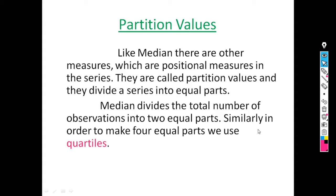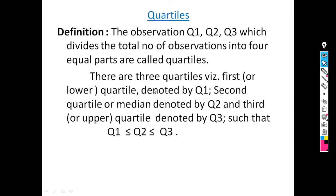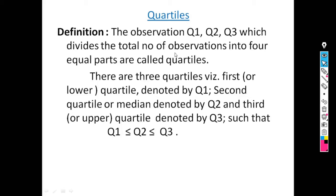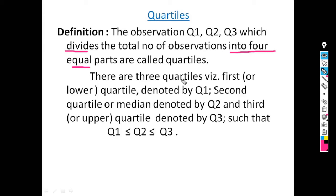If we want to divide the series into four equal parts, we use quartiles. Quartiles divide the series into four equal parts. There are three quartiles: Q1, Q2, and Q3. The definition is: the observations Q1, Q2, Q3 which divide the total number of observations into four equal parts are called quartiles.